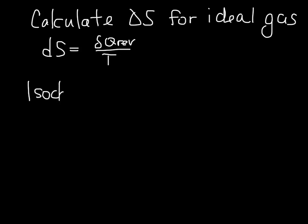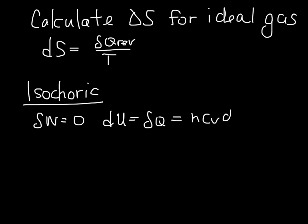So let's start with isochoric. This is constant volume process. And in the constant volume process, we had that the work done was zero, and that dU is equal to delta Q, and is equal to n Cv dT.